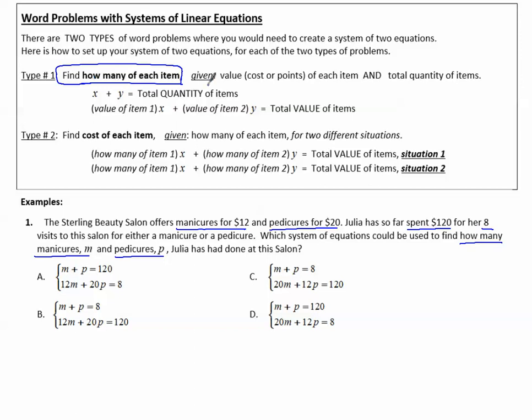So you're going to be given the value, cost, or points of each item and the total quantity of the items. Notice in this question, it says the manicures are each $12. And they called manicures M.